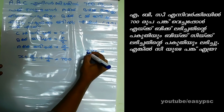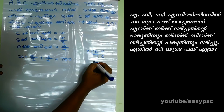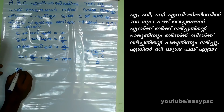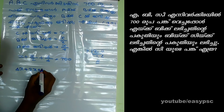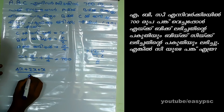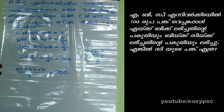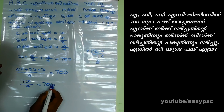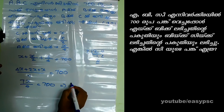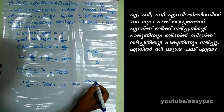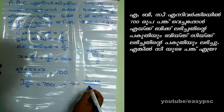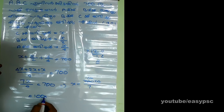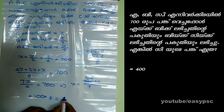This is LC. This is 4. This is 1x. This is 4x. This is 4x plus 2x plus 1x by 4. This total is 7x by 4. This total is 700. Now, the answer is 700 divided by 7, multiplied by 4. 700 divided by 7 is 100; 100 multiplied by 4 is 400. 400 is the right answer.